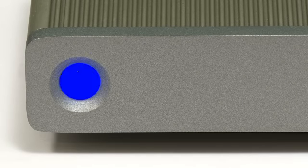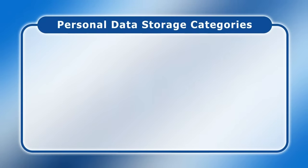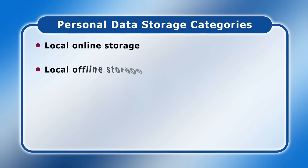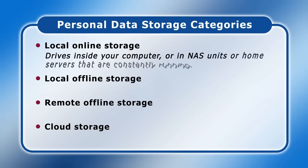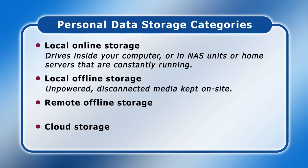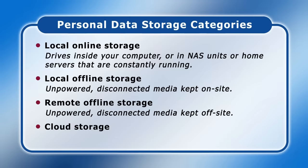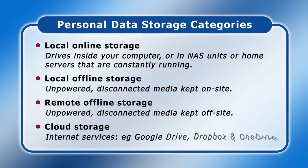Other than making backups in the first place, the key thing for individuals is to decide how to divide copies of their data between four personal data storage categories. These are local online storage, local offline storage, remote offline storage, and cloud storage. Local online storage refers to all drives inside your computer or located in network attached storage units or home servers that are constantly running. Local offline storage refers to SSDs, hard drives and other media that are not powered up or connected to a computer most of the time but which are kept on site. Remote offline storage refers to unpowered, disconnected media that are kept off site. And finally, cloud storage refers to internet services that include Google Drive, Dropbox and Microsoft's OneDrive, as well as dedicated online backup services.